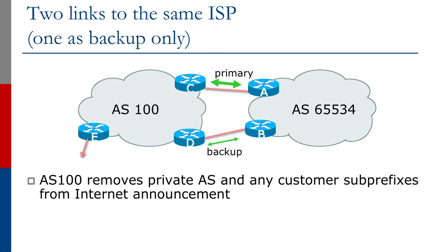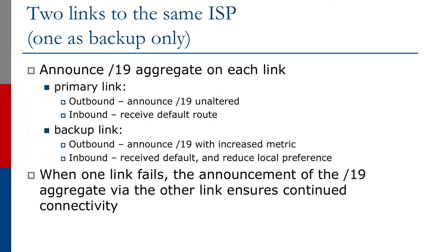To configure this, we announce the slash 19 aggregate on each link. The primary link will receive the slash 19, and the backup link will also receive the slash 19. This means the upstream provider will see the slash 19 on both paths, and if either link fails, the announcement on the alternative path ensures continued connectivity. For inbound traffic, the upstream provider announces a default route on both paths, so the end site sees the default route on both links, again ensuring continued connectivity if either link fails.